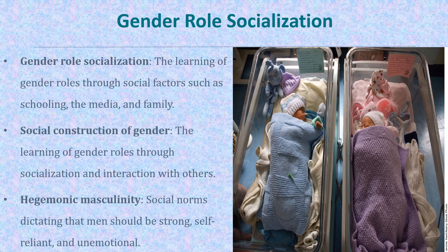You can guess which baby is male and which is female because there is a blue blanket over one child and a pink blanket over the other. Society socializes us to accord colors to gender, and this starts as early as birth.